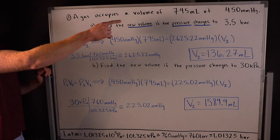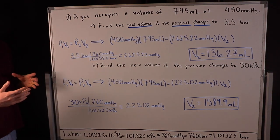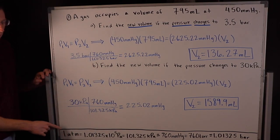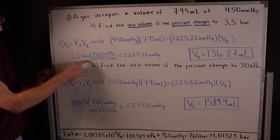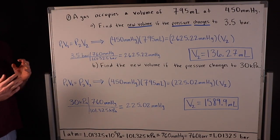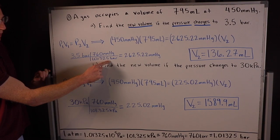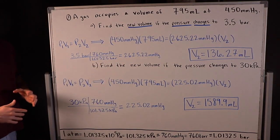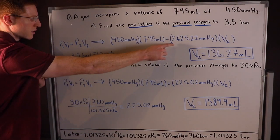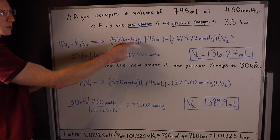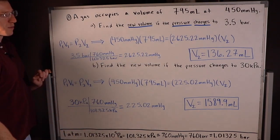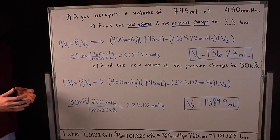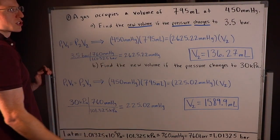We can change 3.5 bar to millimeters of mercury using the conversion: 760 mmHg equals 1.01325 bar. Placing bar on the bottom and mmHg on top, we find that 3.5 bar equals 2625.22 mmHg. Plugging P2 = 2625.22 mmHg and P1 = 450 mmHg, V1 = 795 mL into P1V1 = P2V2, it's a simple algebra problem. Solving for V2 gives 136.27 milliliters as the new volume.